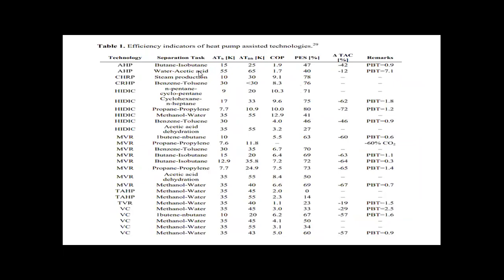For butane-isobutane separation, use AHP. For water-acetic acid or steam production or benzene-toluene systems, use CRHP. For n-pentane, cyclopentane, cyclohexane, propane-propylene, methanol-water, benzene-toluene, or acetic acid dehydration systems, use heat integration systems. For butane separation, propane-propylene, benzene-toluene, isobutane separation, or acetic acid dehydration, use MVR. For methanol-water systems, depending on COP and efficiency, use TAP, MVR, or VC. Depending on temperature conditions, COP, and energy efficiency, select the appropriate HPAD technology.